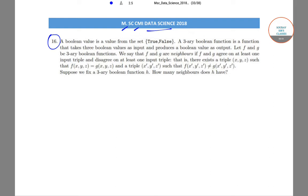So this is a subjective question, a short answer type question. In this question it has been asked that a boolean value is a value from the set true, false. So there are two elements in the set from which a boolean value can be taken.